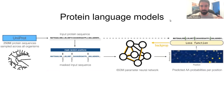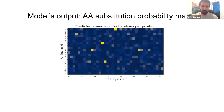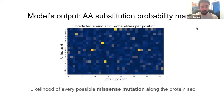That naturally gives rise to the idea of protein language models, trained in very much the same way. For example, we could take UniProt — the database of protein sequences — which nowadays has over 250 million protein sequences. Each time we take a protein sequence, we mask some residues at random, and then train a model to predict the missing residues. Once trained, what we end up with is an amino acid substitution probability matrix — essentially, how likely is each alternative amino acid to be at each position, giving us the likelihood of every possible missense mutation along the protein sequence.